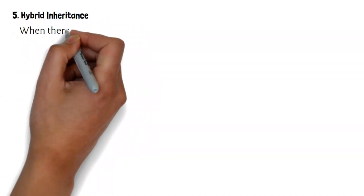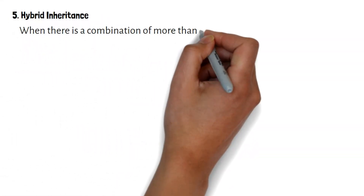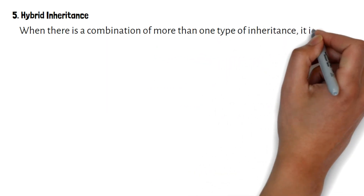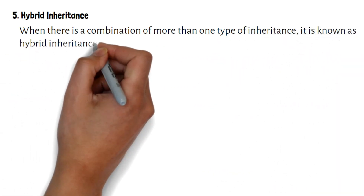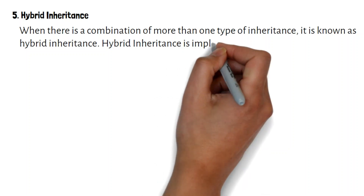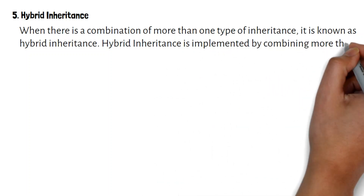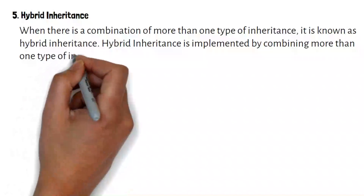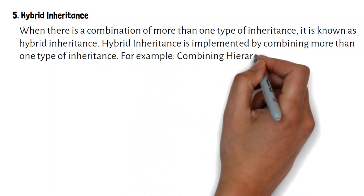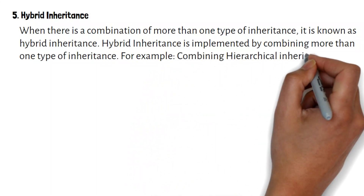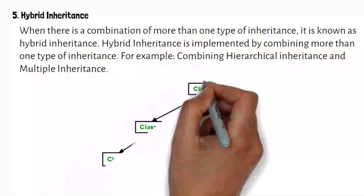Hybrid inheritance: when there is a combination of more than one type of inheritance, it is known as hybrid inheritance. Hybrid inheritance is implemented by combining more than one type of inheritance, for example combining hierarchical inheritance and multiple inheritance.